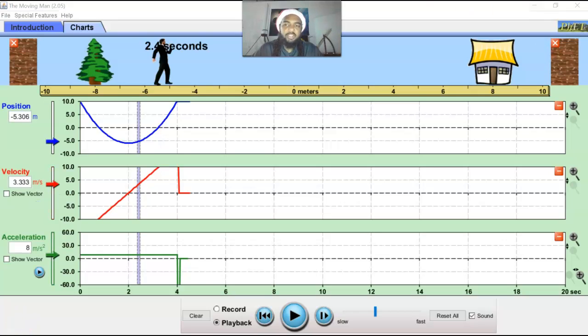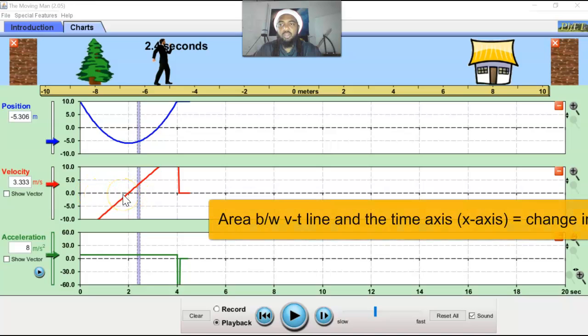Play around with this if you need to better understand how these graphs represent different types of motion. One more point that's worth mentioning is that the area beneath or between these graphs, at least for velocity and acceleration, between the graph and the x-axis has a meaning. And for velocity, the area between the graph and the x-axis is equal to the distance traveled, and for acceleration, the area below the graph is equal to the velocity at that point in time.